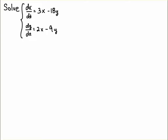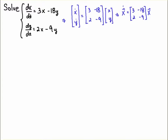Okay, let's begin. So, we have this system of ODEs, and I'm going to write this as a matrix equation. So, x dot corresponds to dx/dt, y dot corresponds to dy/dt, and I just pick off the coefficients: 3, minus 18, 2, minus 9, and then we have the vector x, y.